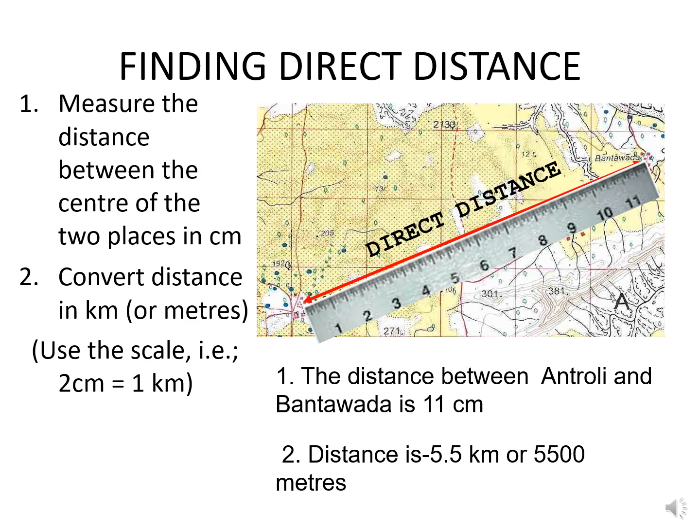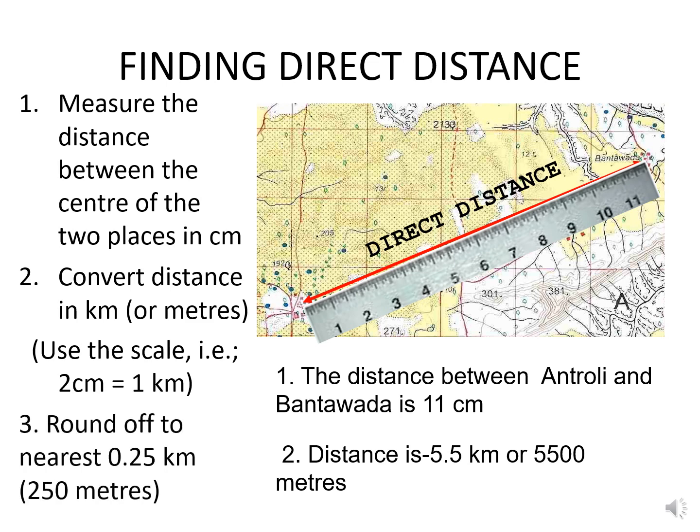In case the answer comes in decimals after division, round it off to the nearest 0.25 kilometres. For example, if you get 11.5 centimetres, the distance becomes 5750 metres — round it off to either 5500 metres or 6000 metres.